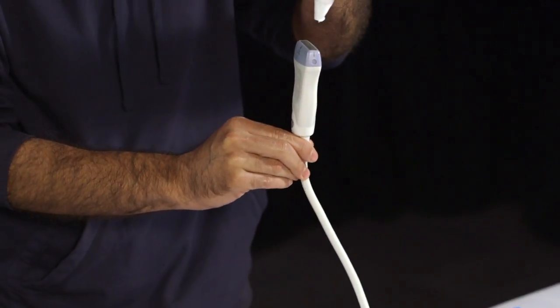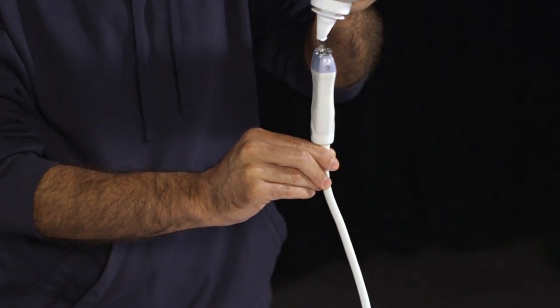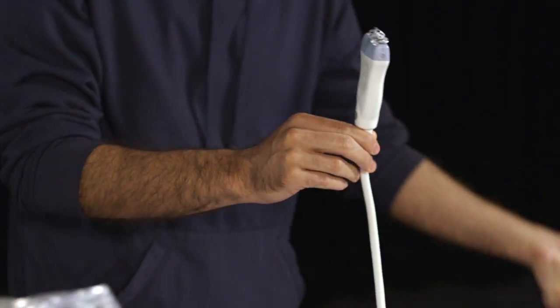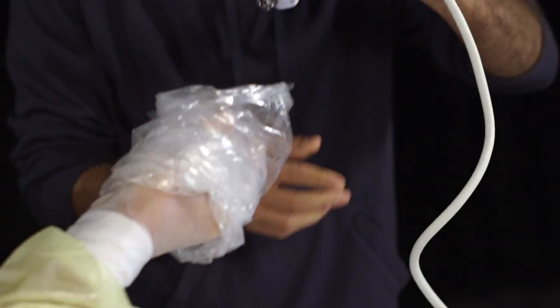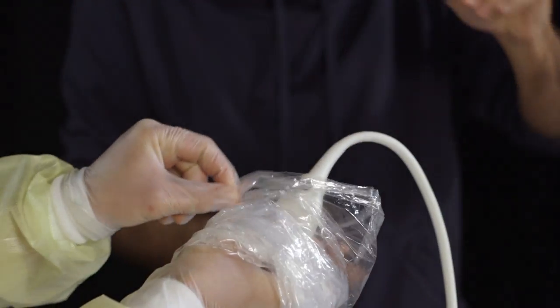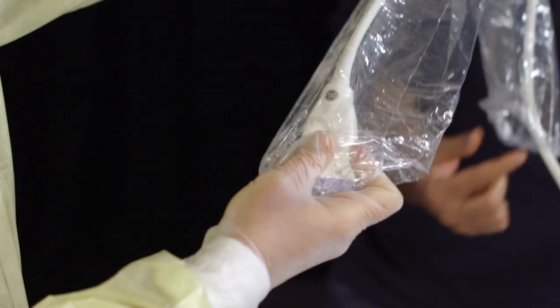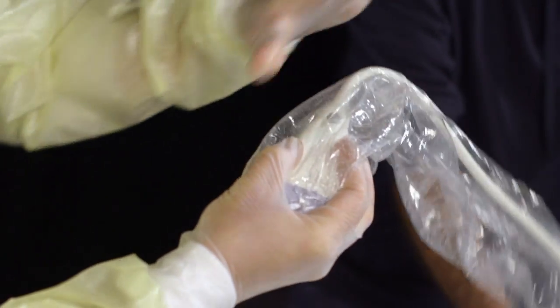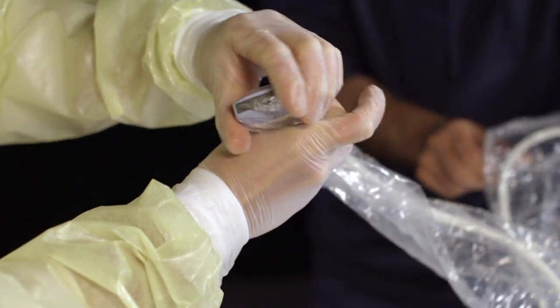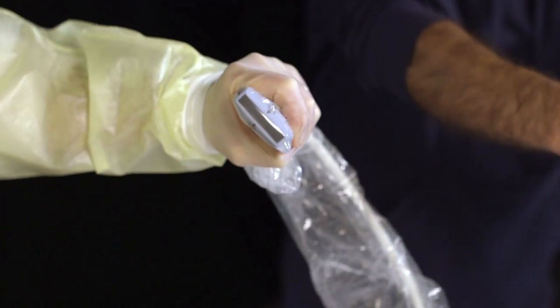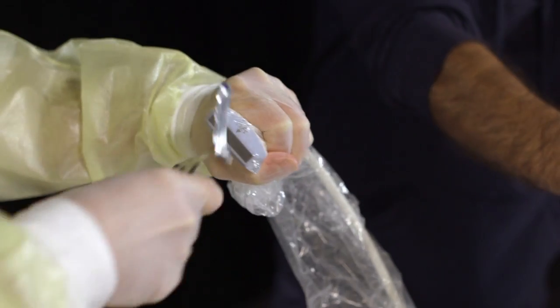You might need an assistant to help you apply the sterile probe cover. Have your assistant place gel on the probe and then help you place the probe inside the sterile cover. Remember to remove any air bubbles caught under the cover. Apply sterile gel to the outside of the probe cover.